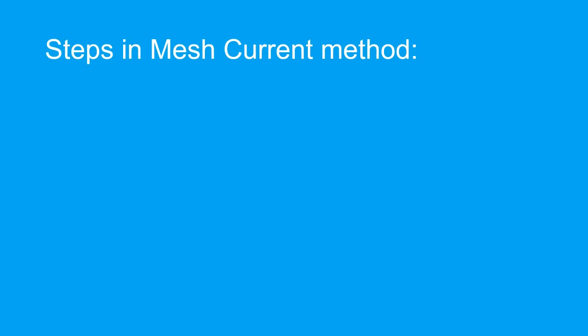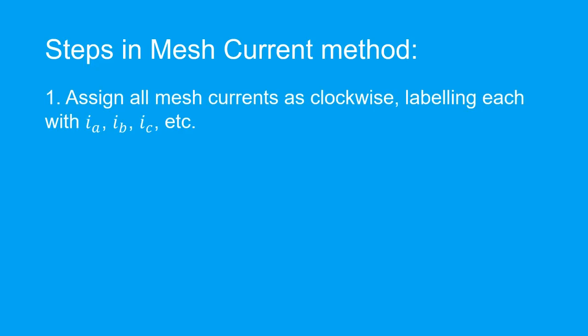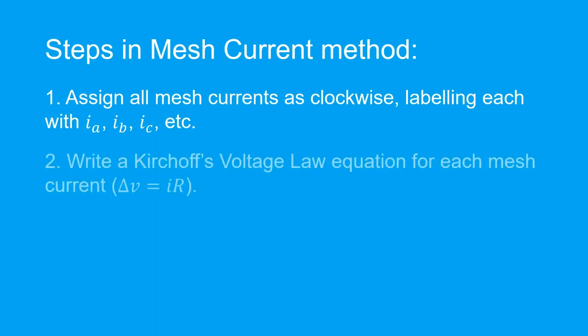The first step in the mesh current method is to assign all the mesh currents in the clockwise direction and give them a name, for example Ia, Ib, and so on. Subsequently, we will write a Kirchhoff's voltage law equation for each mesh current, expressing each voltage change using the formula delta V equals Ir. This gives us a system of linear equations.